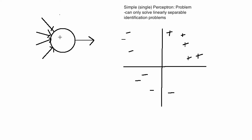In this model we have four inputs and one output, so that would be five-dimensional. It would mean this is capable of solving problems where all of the positive examples would be on one side of a five-dimensional hyperplane and all the negative examples would be on the other side.